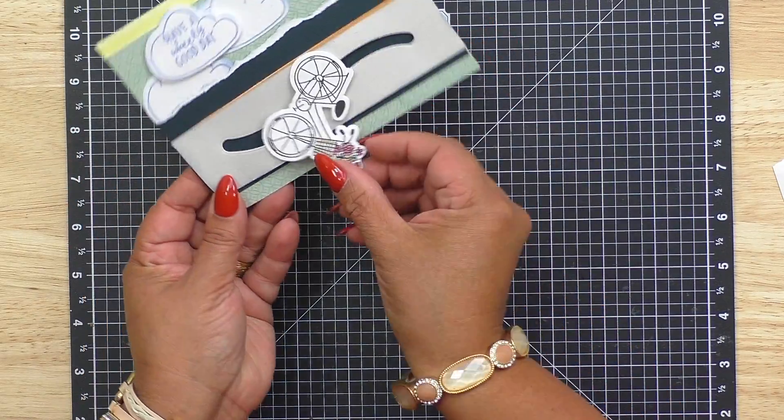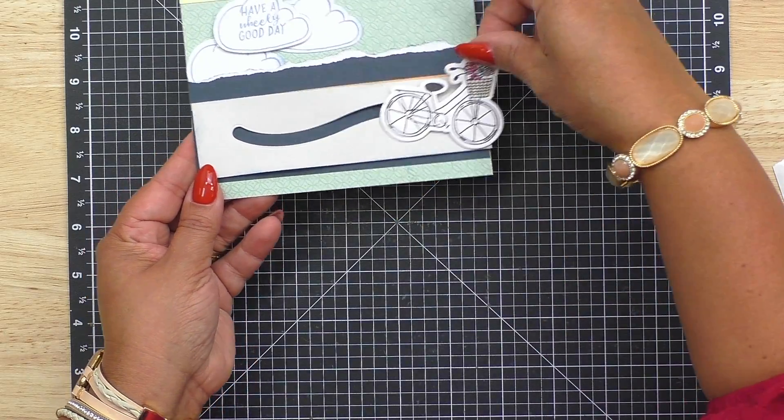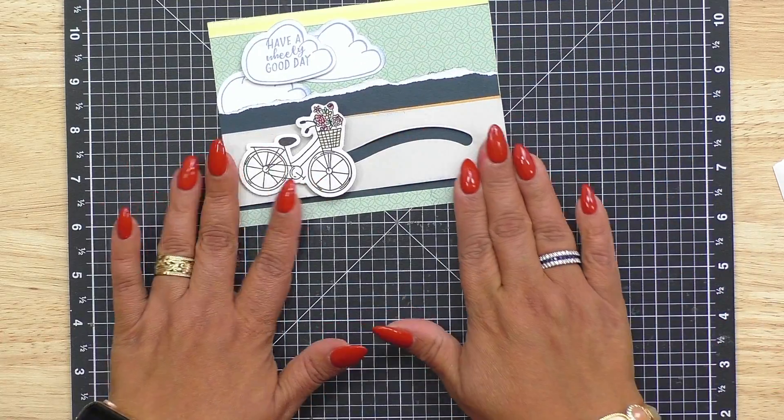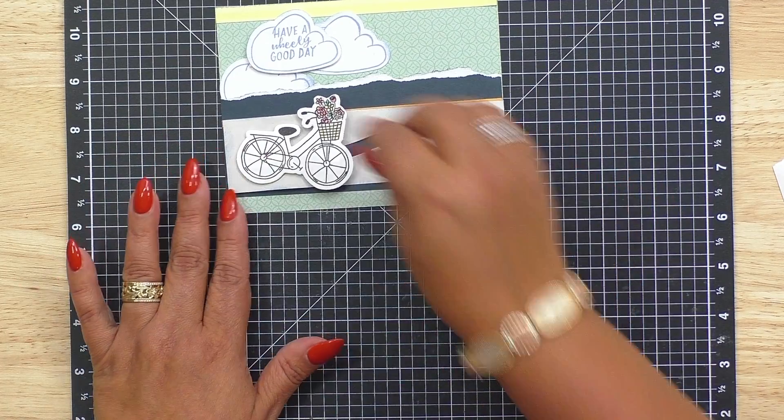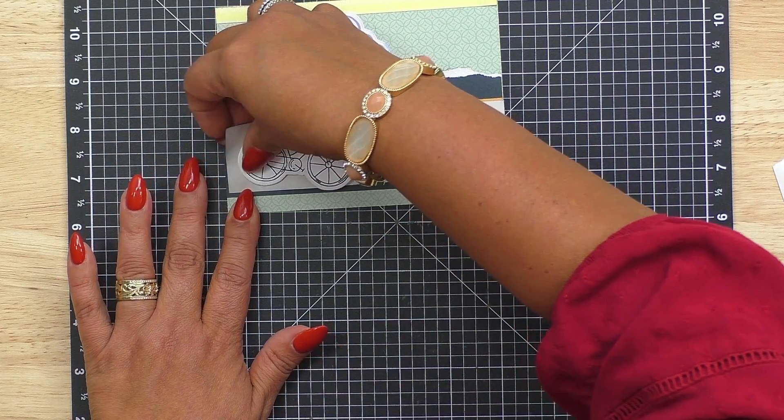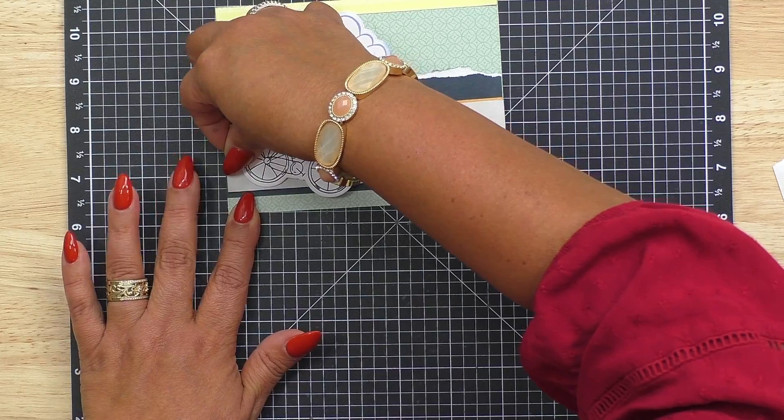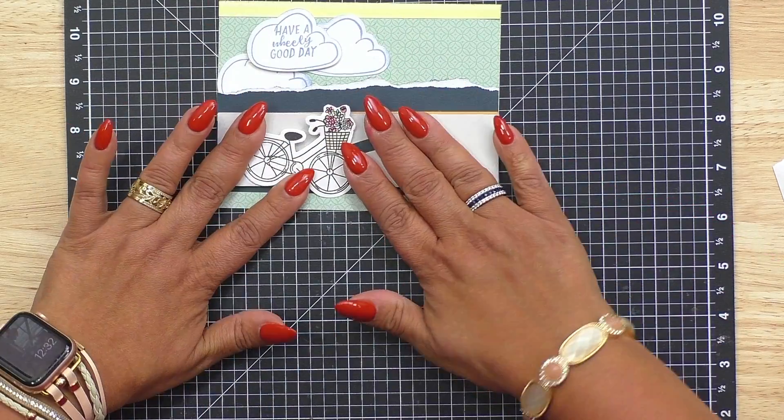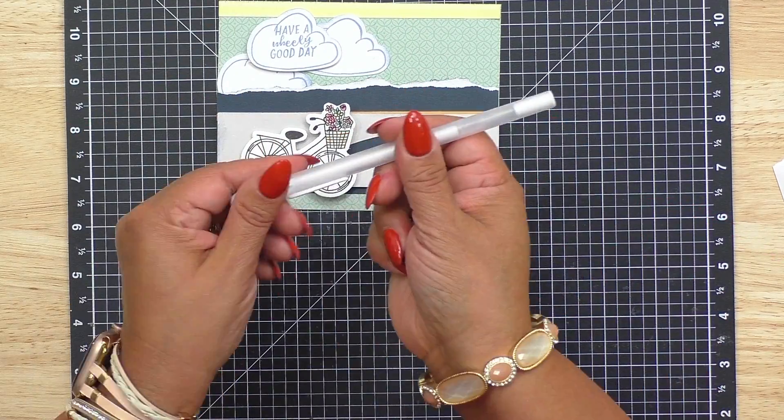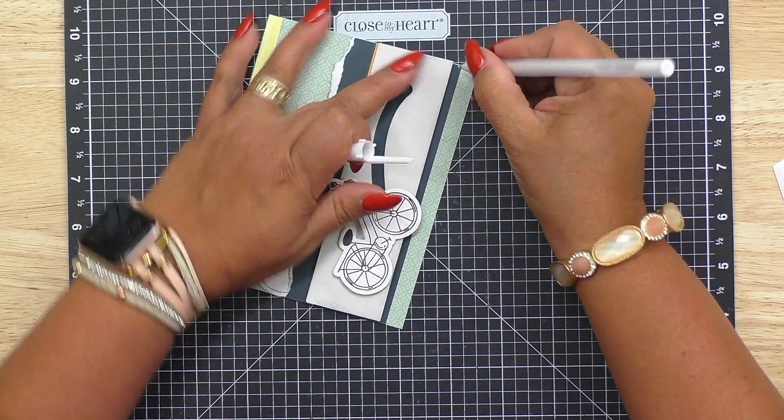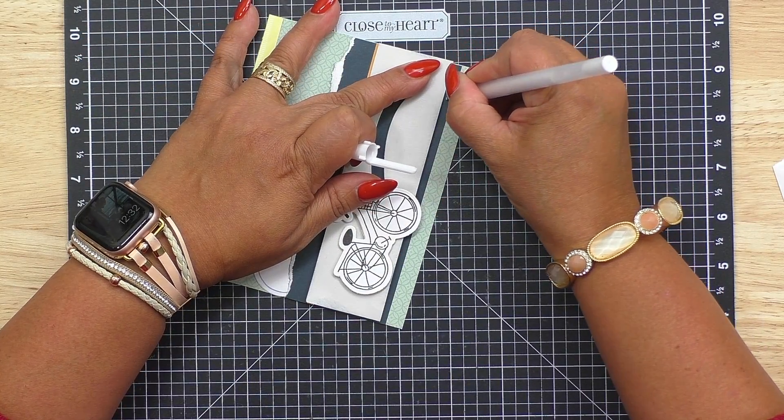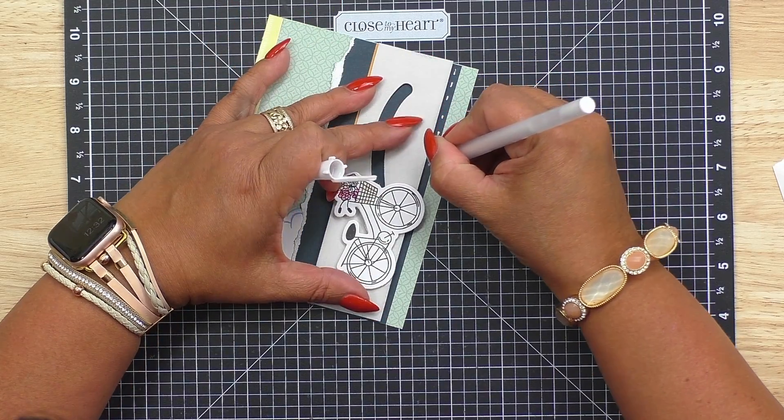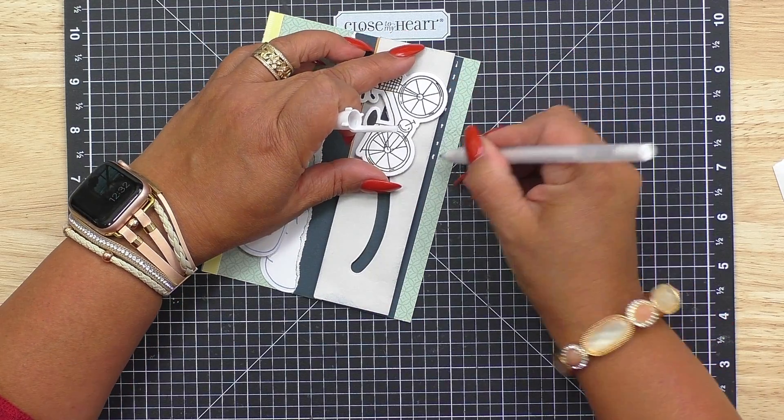It slides so easy doesn't it? So cute. Now I'm going to add just a little finishing touch. Let me just pick that up just a little bit. There we go. We're going to add some gel pen just to add a little more character to this piece. A little stitch. Let's move our bike across.